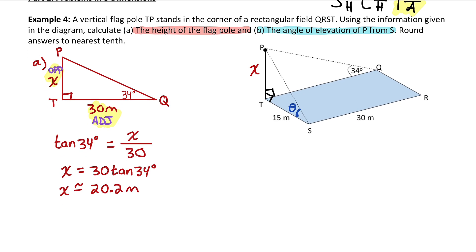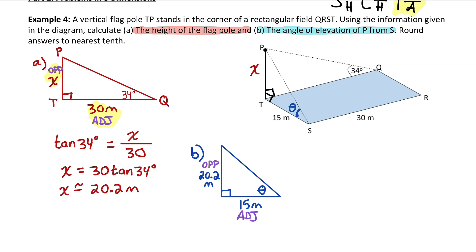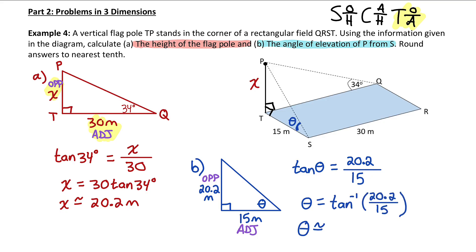For part b, we need the angle of elevation of P from S — the angle inside a right triangle where one side is the flagpole height of 20.2 meters and the adjacent side is 15 meters. From the reference angle, we know the opposite side (20.2) and the adjacent side (15), so we use tan again. Tan(θ) = 20.2 / 15, and applying inverse tan gives θ ≈ 53.4 degrees.